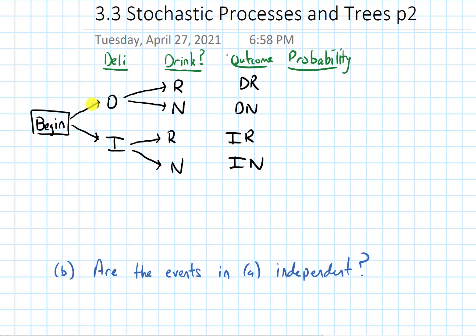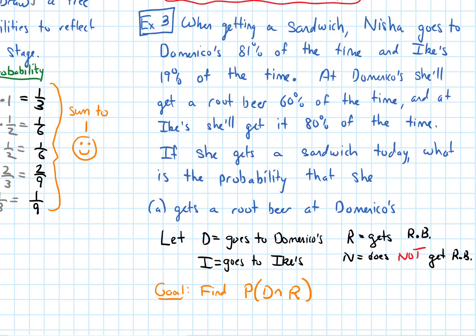Let's label the probabilities of each branch. The question says there's an 81% chance she goes to Domenico's, so I'll write 0.81. There's a 19% chance she goes to Ike's, so I'll write 0.19 — and notice these two numbers add up to one, which is good. At Domenico's she'll get a root beer 60% of the time, and at Ike's she'll get a root beer 80% of the time.